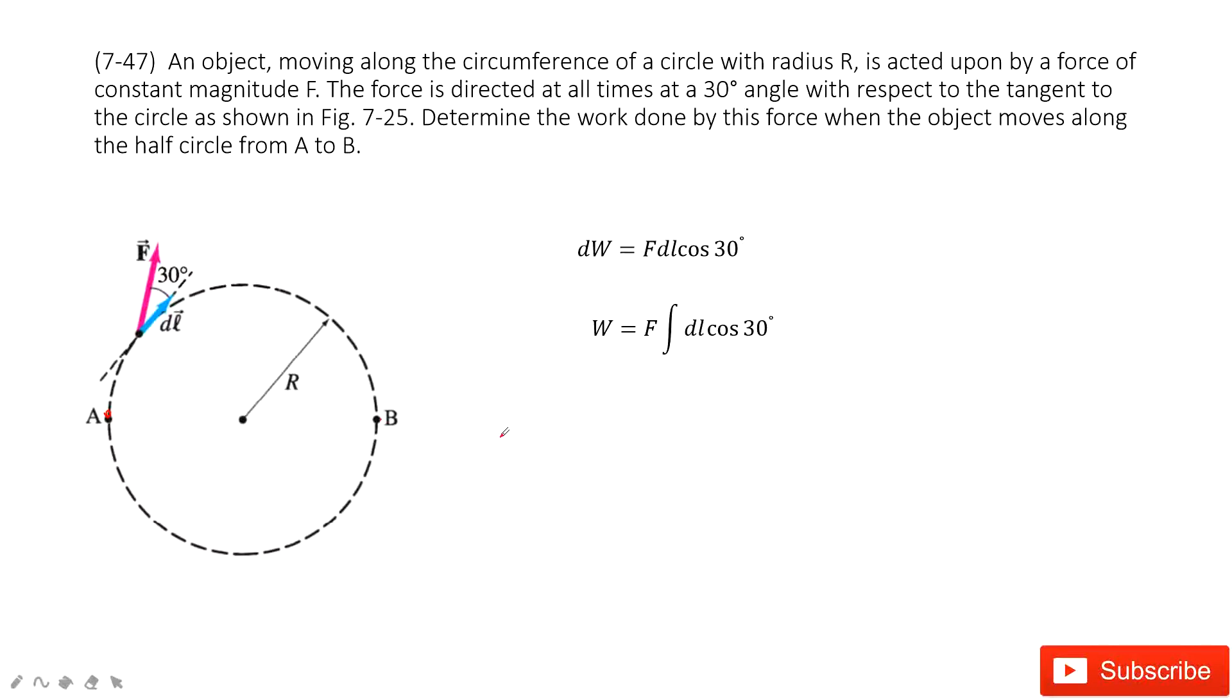So first thing we consider: the work must be the dot product F with L. But you can see F keeps changing, L keeps changing. How can we do that?